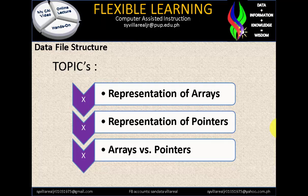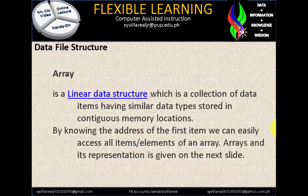An array is a linear data structure which is a collection of data items having similar data types, stored in contiguous memory locations. By knowing the address of the first item, we can easily access all items or elements of an array.